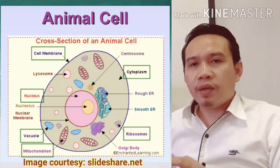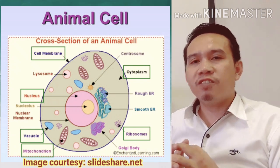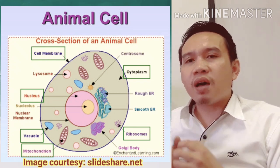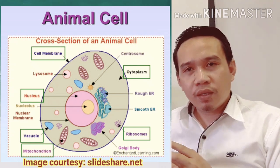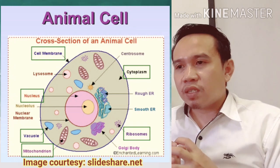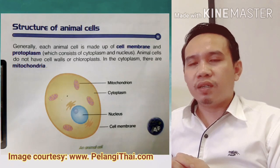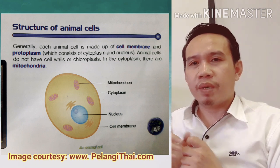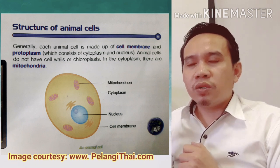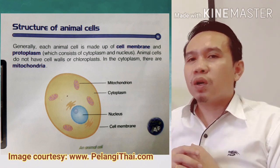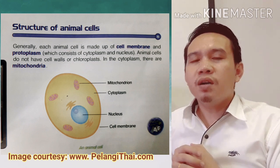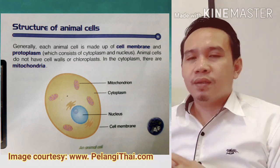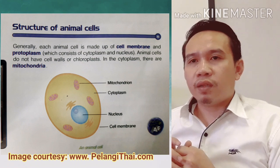Now I am going to explain and identify the important structure of animal cells. Generally, each animal cell is made up of cell membrane and protoplasm, which consists of cytoplasm and nucleus. Animal cells do not have a cell wall or chloroplast — that is only for plant cells. In the cytoplasm there are mitochondria. Look at the structure of the animal cell in this illustration.